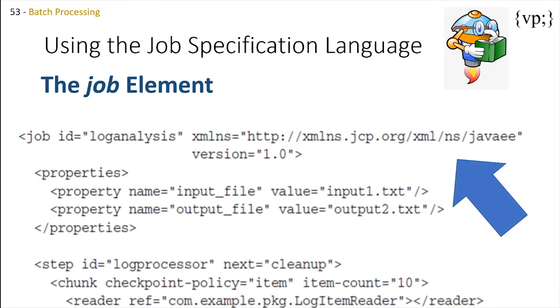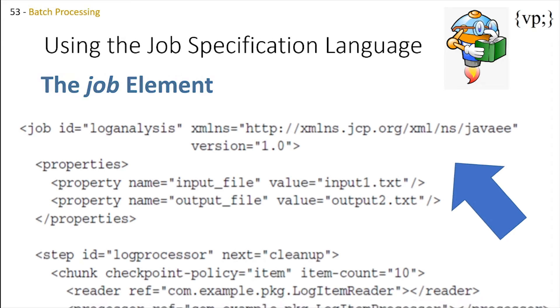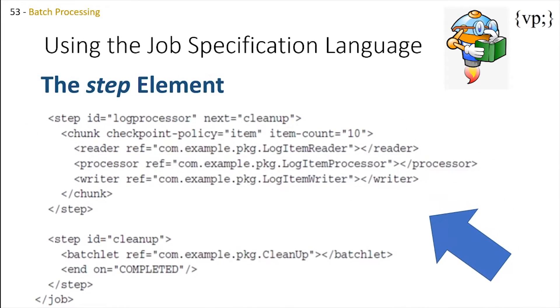The job element is always the top level element in a job definition file. The job element can contain one properties element and zero or more of each of the following elements: either a listener, step, flow, and split. Next, the step element. The step element can be a child of the job and flow elements. The step element always has one chunk element for chunk-oriented steps or one batchlet element for task-oriented steps. Over here you can see that this step element has a chunk element in it.